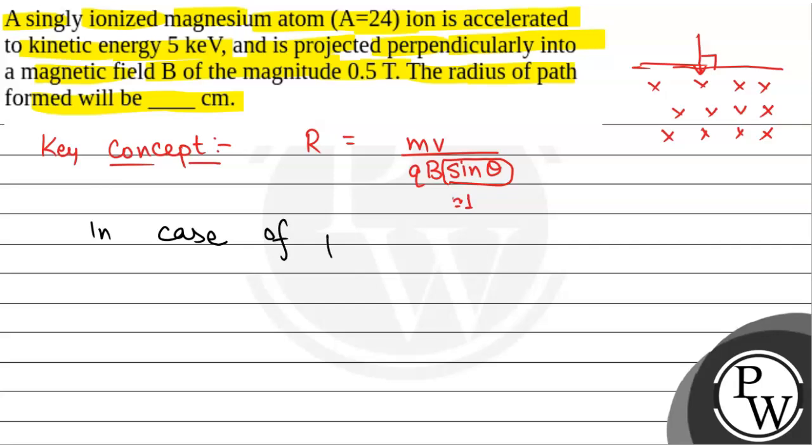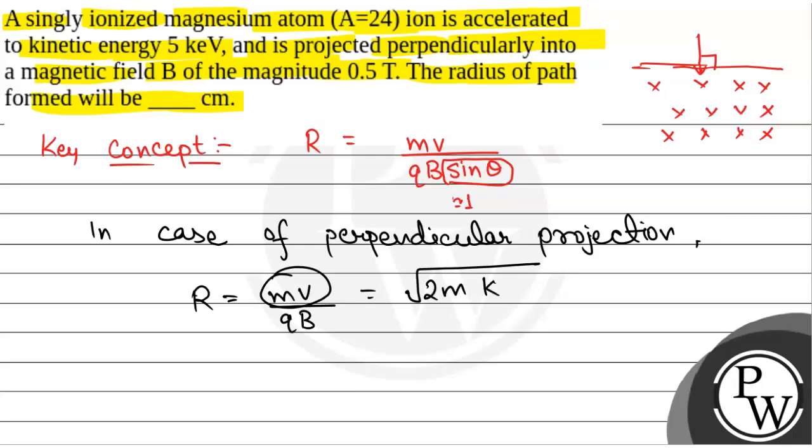In case of perpendicular projection, we will have r equals mv upon qB. And now mv is momentum, which is equal to square root of 2m into kinetic energy k, by qB.